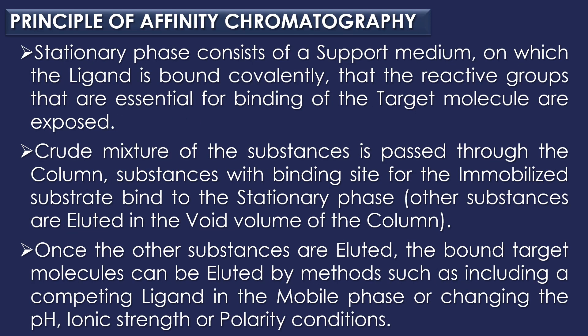The stationary phase consists of a support medium on which the substrate or ligand is bound covalently, such that the reactive groups essential for binding of the target molecules are exposed. As the crude mixture is passed through the chromatographic column, substances with binding sites for the immobilized substrate bind to the stationary phase, while all other substances are eluted in the void volume. Once the other substances are eluted, the bound target molecule can be eluted by including a competing ligand in the mobile phase or by changing the pH, ionic strength, or polarity conditions.